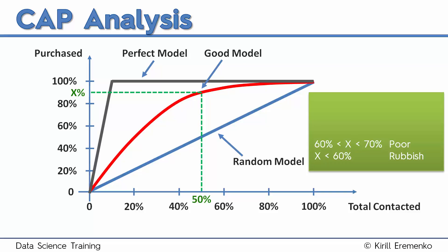If your X is between 60% and 70%, then the model is considered to be poor or average. And by the way, this is my rule of thumb. Other people might have a different rule of thumb, but this is what I go by. If it's between 60% and 70%, it's a poor model to be honest. You can do better than that.